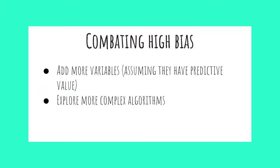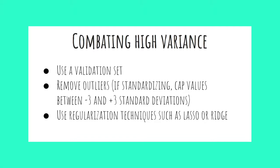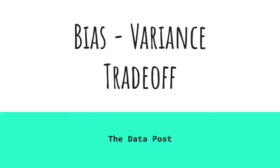To lower bias, consider adding more variables with predictive value — for example, adding home team status and injury information alongside win percentages. You can also explore more complex algorithms such as random forests or neural networks instead of linear regression. To reduce high variance, consider using a validation set in addition to training and testing sets, removing outliers, and bounding standardized values between negative 3 and positive 3. Additionally, look to regularization techniques such as lasso and ridge to penalize higher coefficient values. These are good starting points, though not exhaustive.